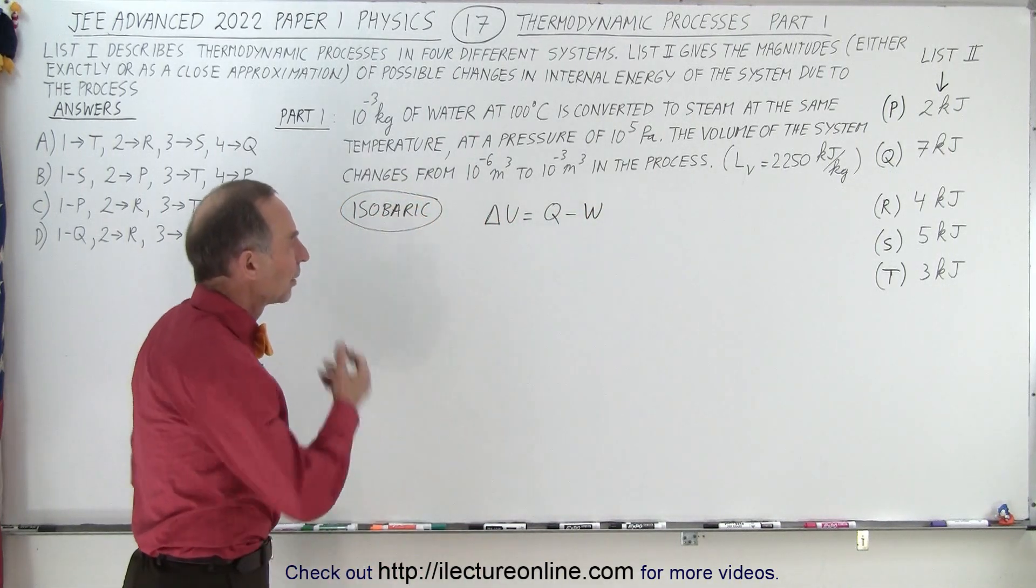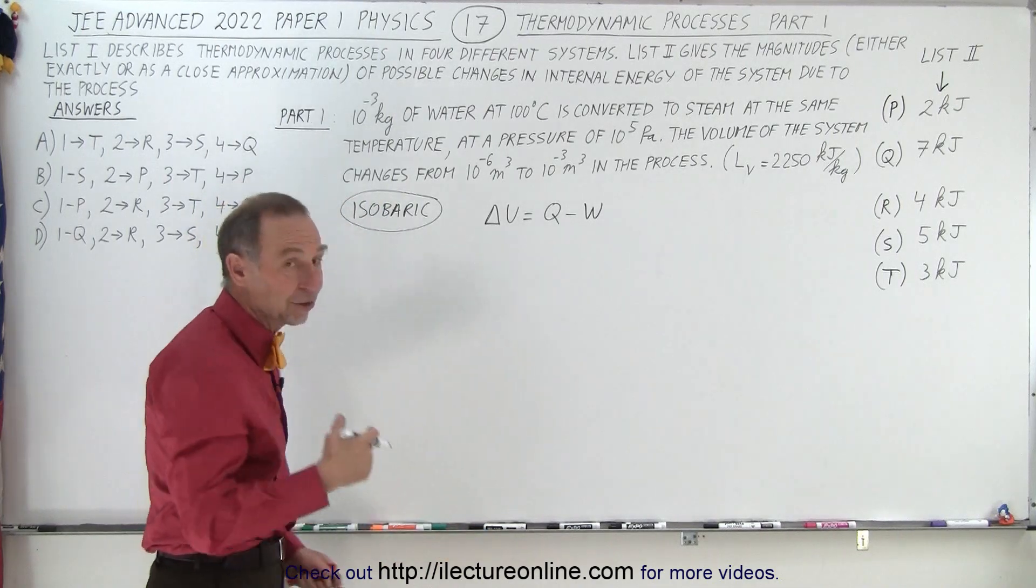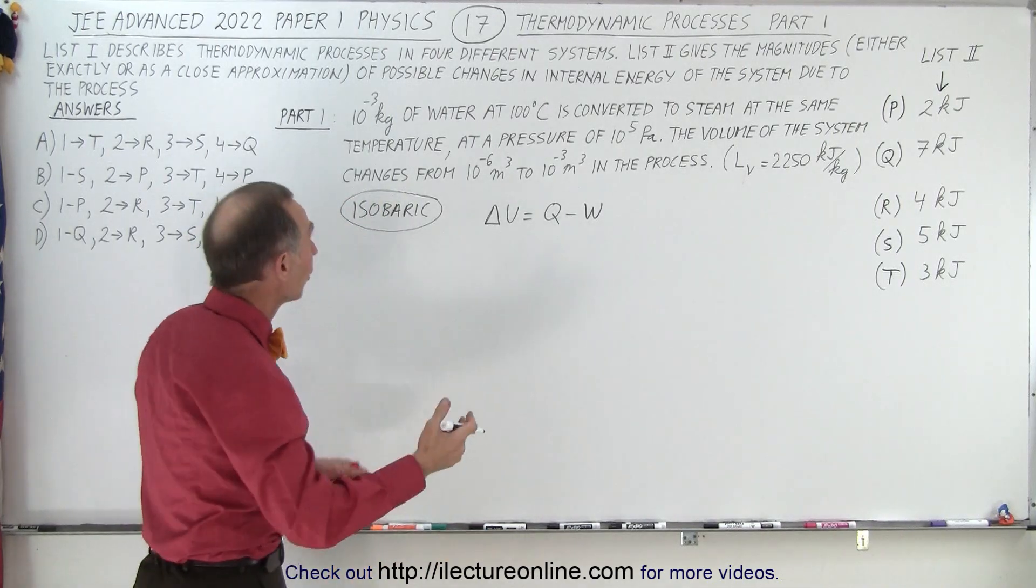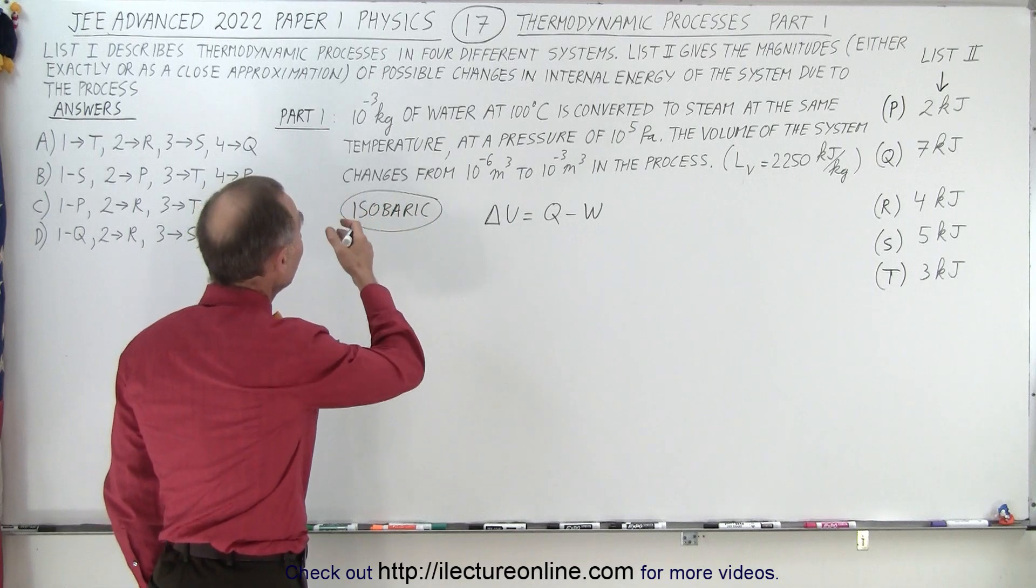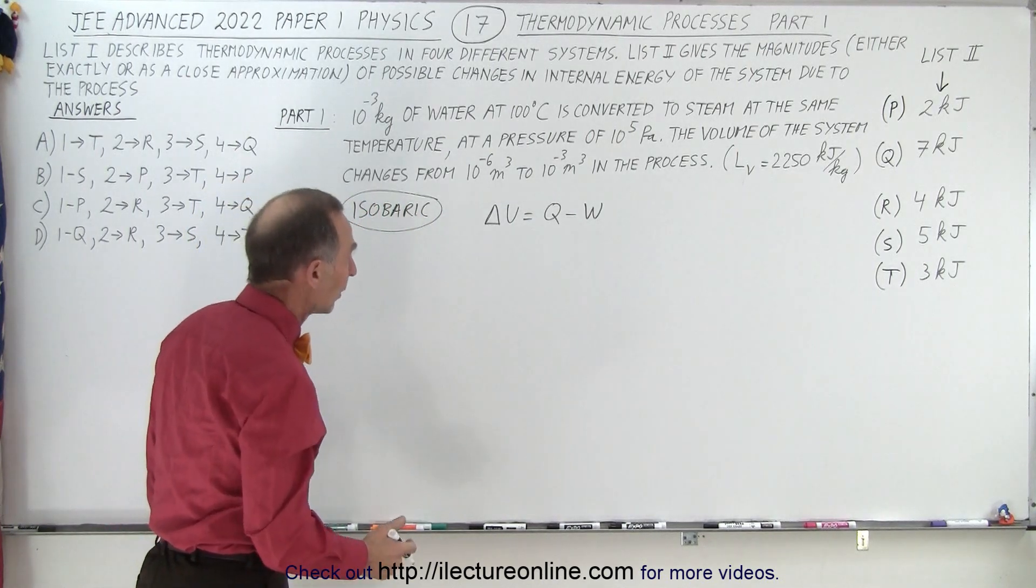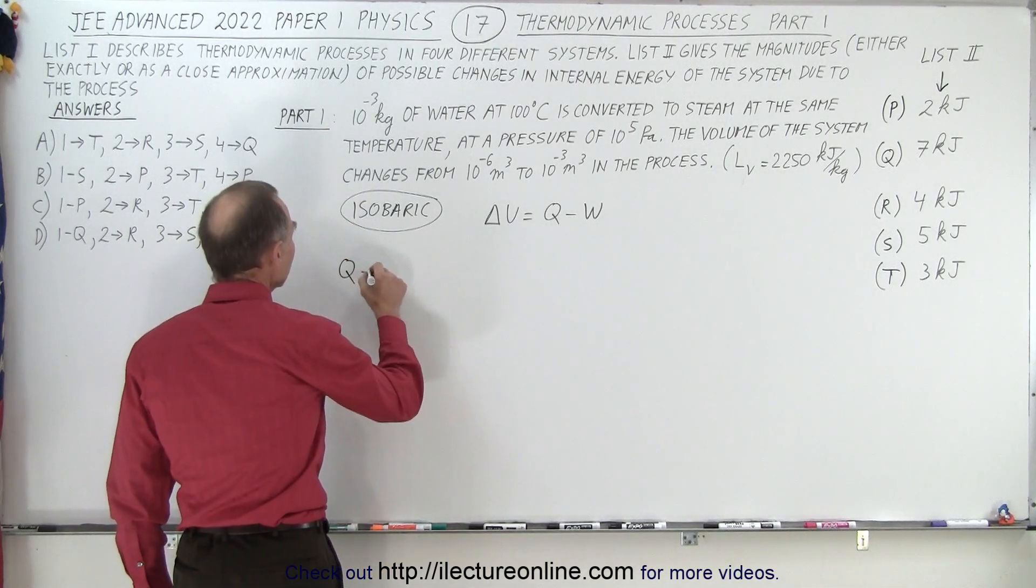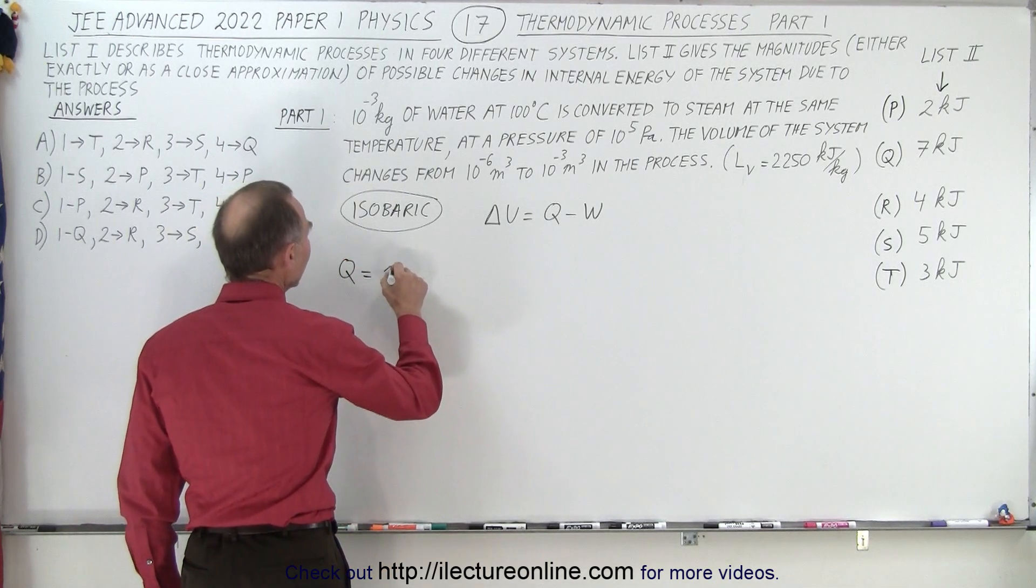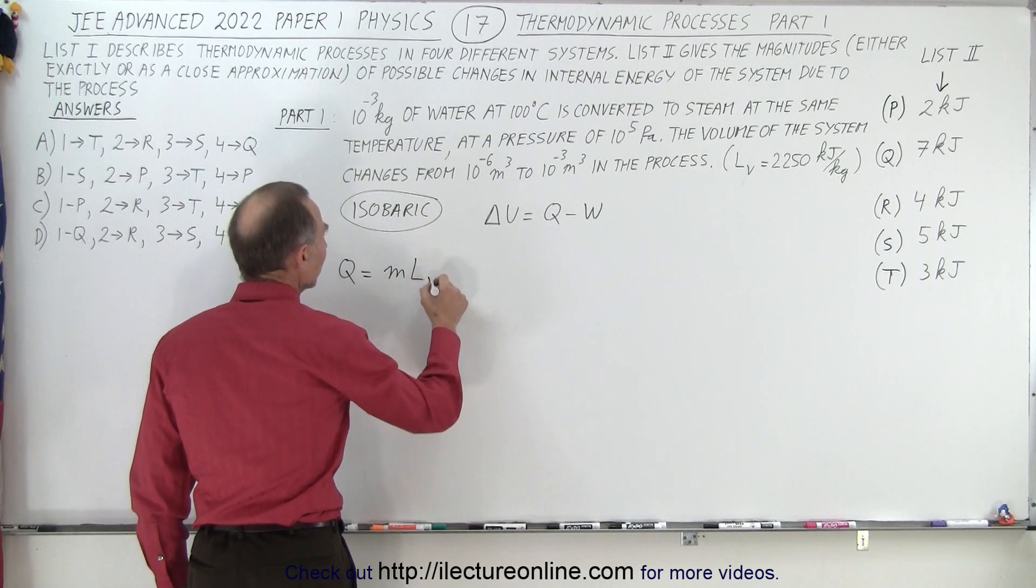Q is the heat added. How much heat do we need to add? Enough to take one gram of water and vaporize or boil it away. So Q, the heat added, equals the mass times the latent heat of vaporization.